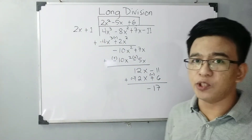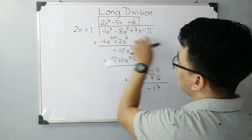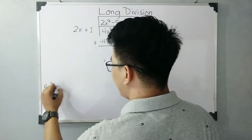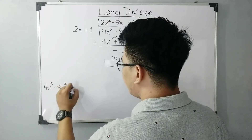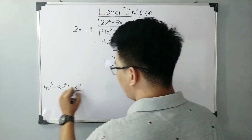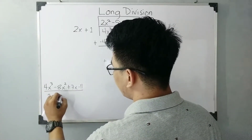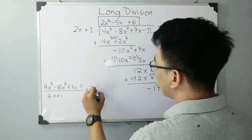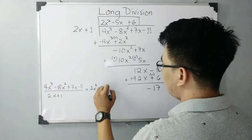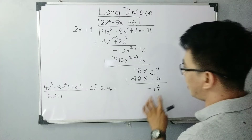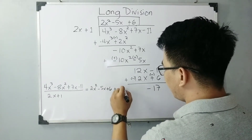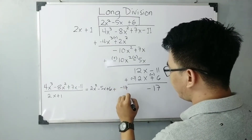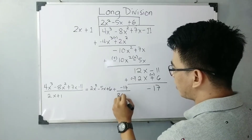This is the quotient, this is the remainder, and this is your divisor. So, to express our answer: we write the given dividend over the divisor — that is 4x cubed minus 8x squared plus 7x minus 11 over 2x plus 1 — equals the quotient, which is 2x squared minus 5x plus 6, plus the remainder over the divisor. Since the remainder is negative 17, it becomes minus 17 over 2x plus 1.